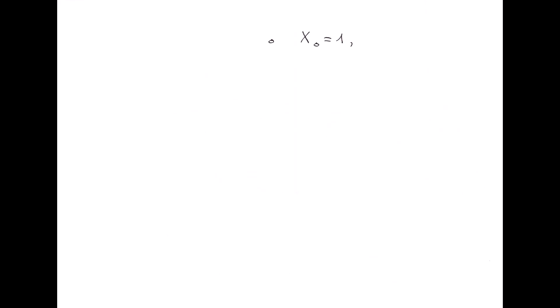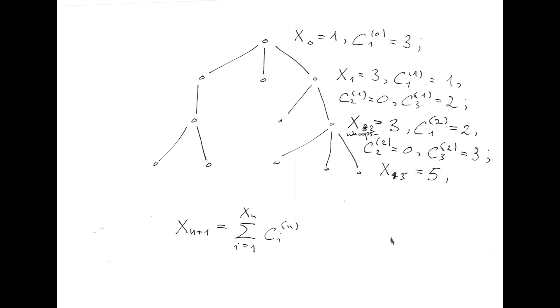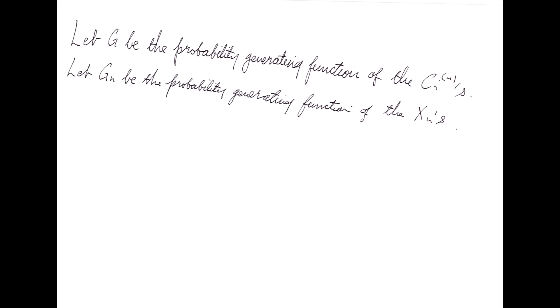Branching processes. We'll consider an example of what's called a branching process. Specifically, we'll consider a model where we have a population that lives within a certain unit of time before dying off and giving offspring under a certain iid distribution for each member of the population. If we denote by xn the population at unit time n, and we denote by cni the number of offspring given by the i-th individual in the n-th generation, we can write that xn plus 1 is the sum of the cni's over iid.